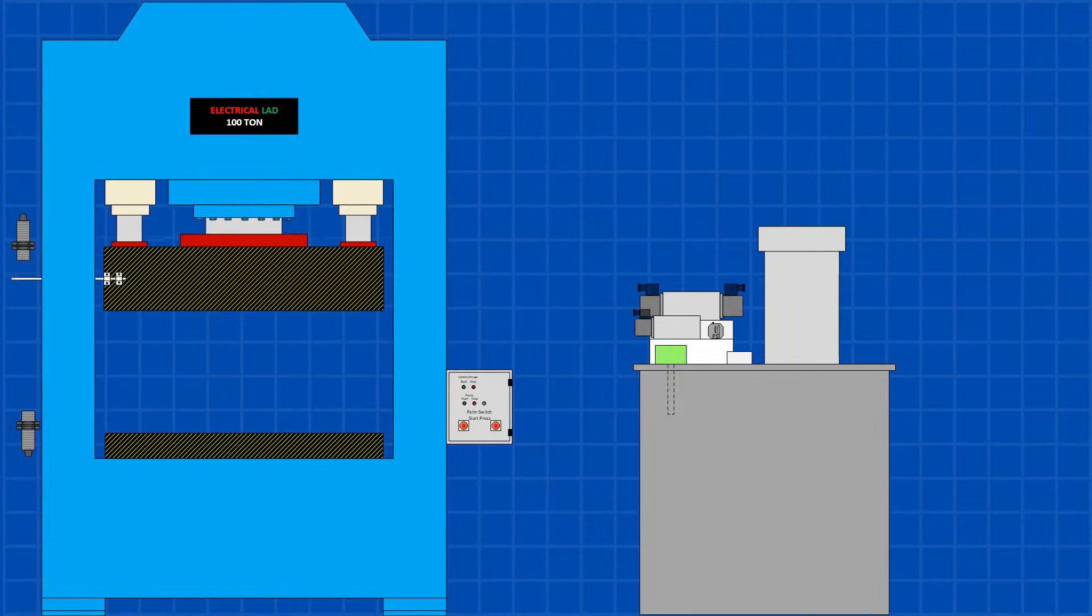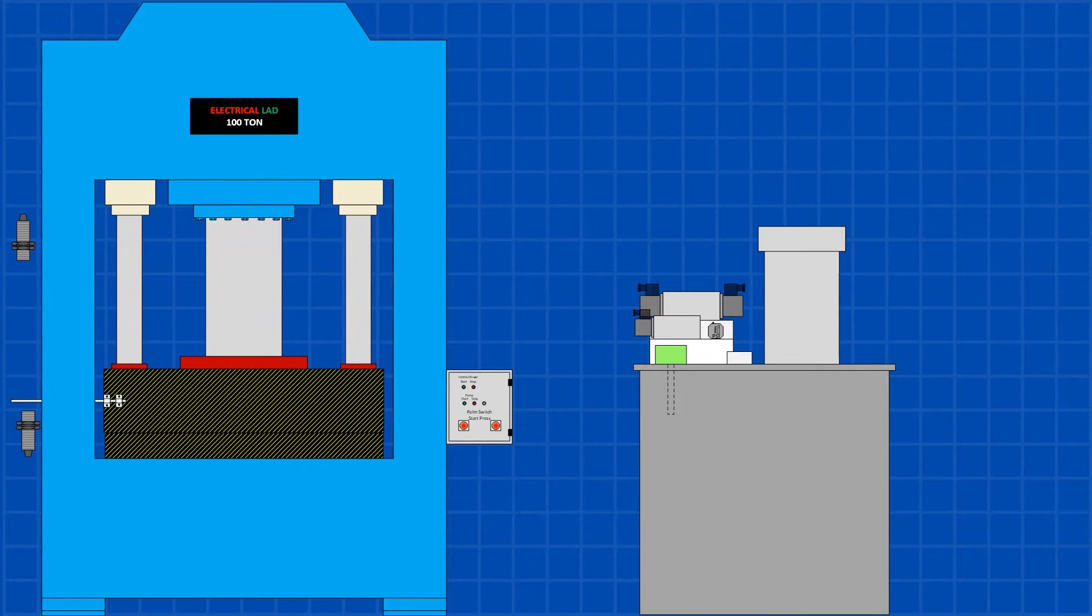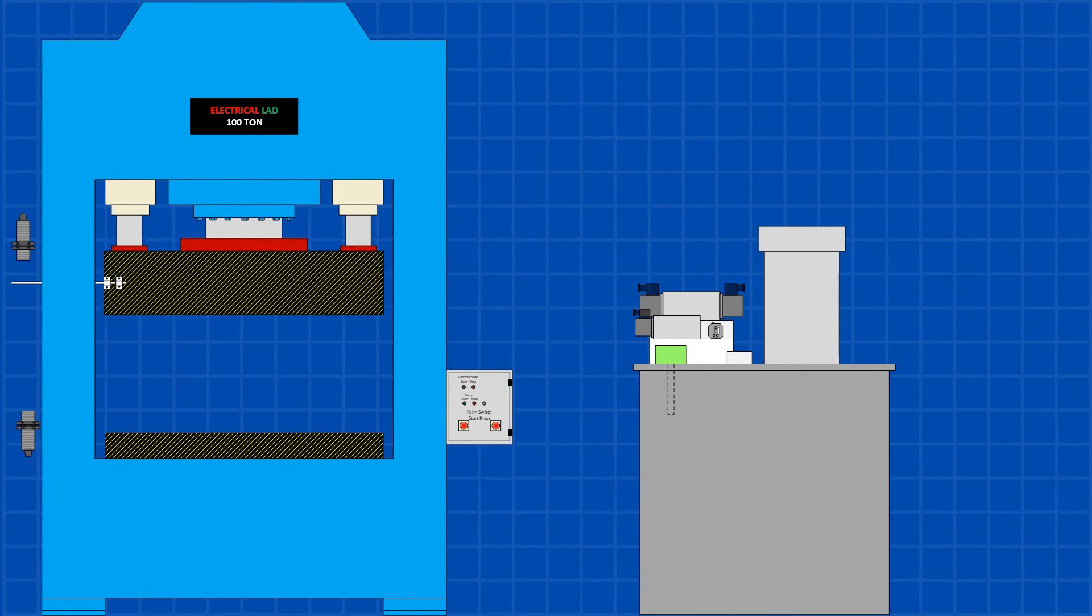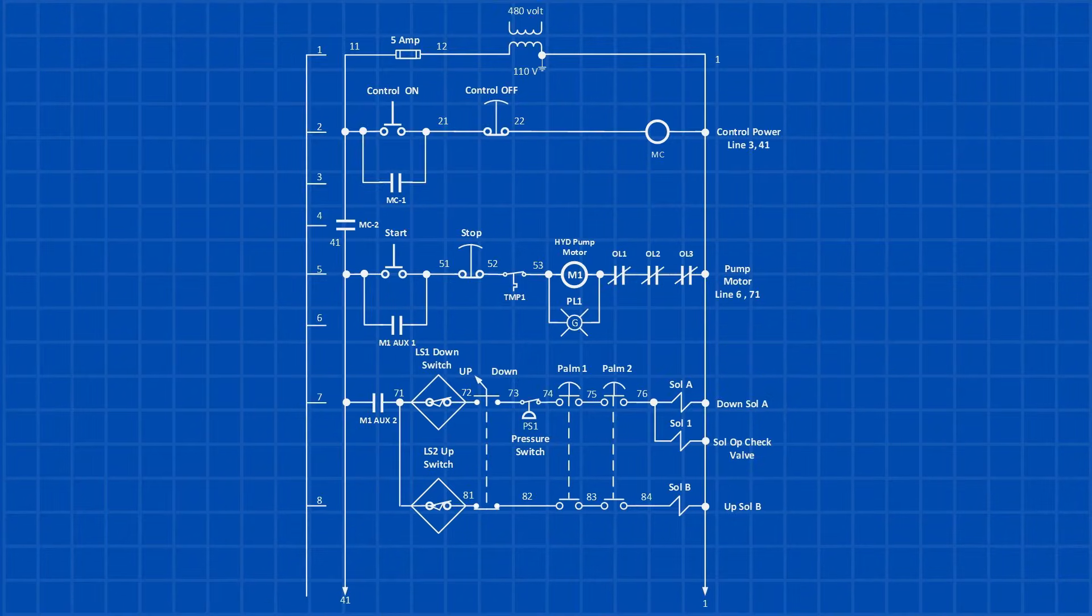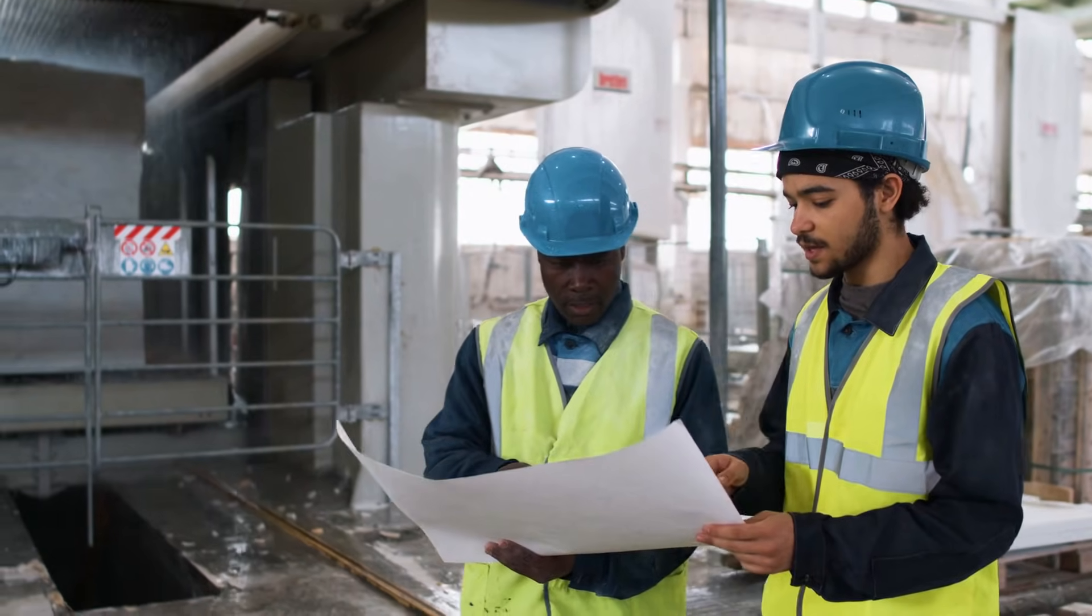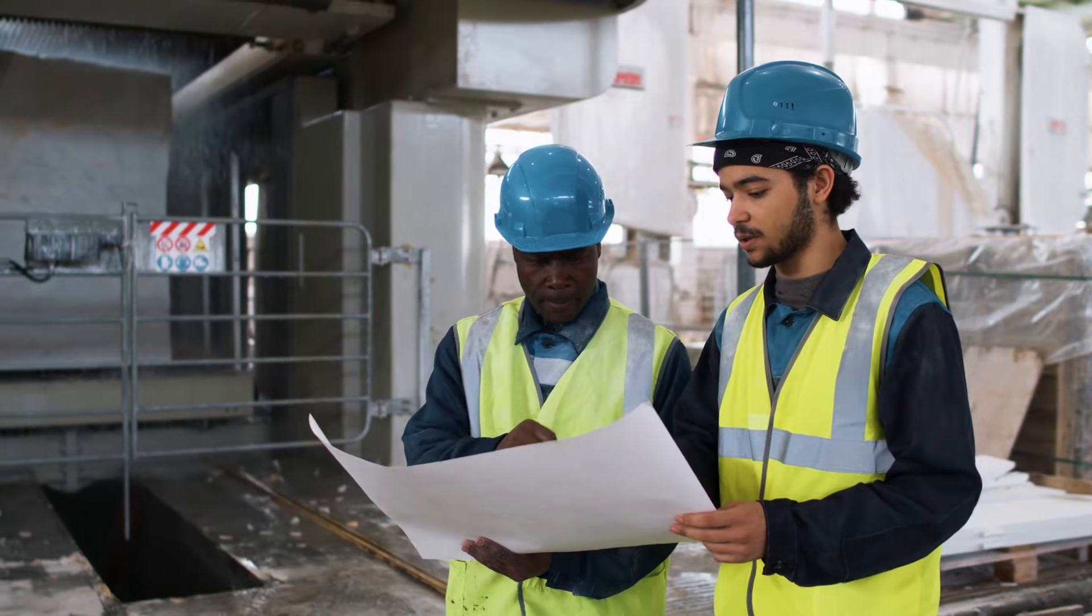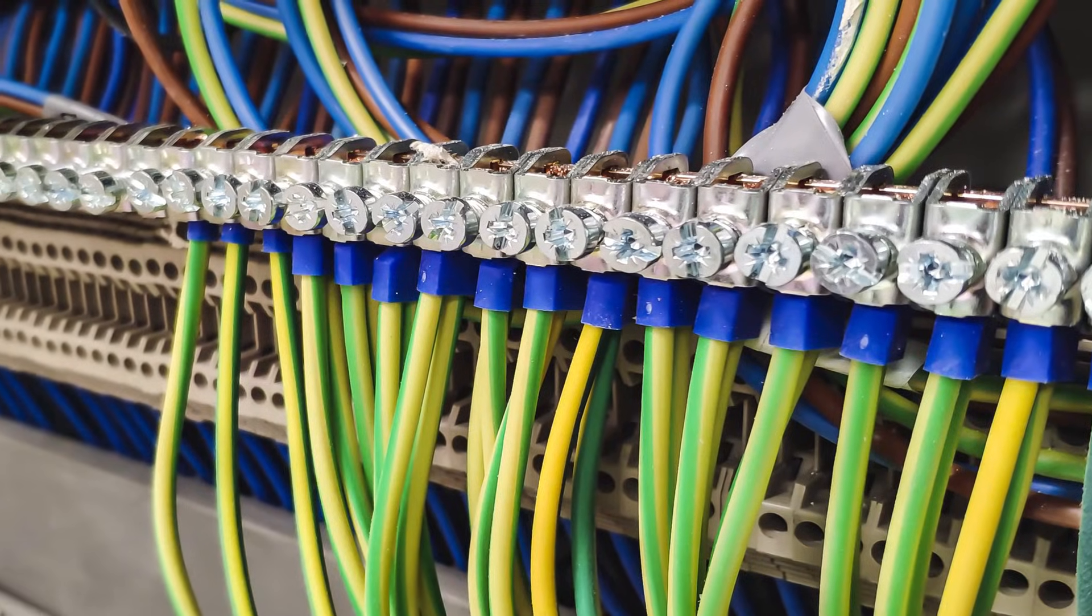By the end of this video, you should be able to read and understand complex ladder diagrams. Ladder Diagram represents the electrical circuit in the control system. It makes it simple for electricians and engineers to understand the control scheme.